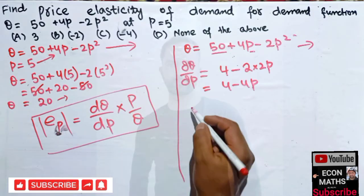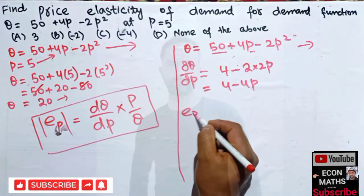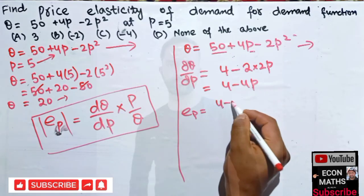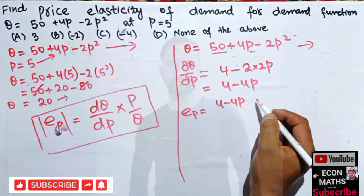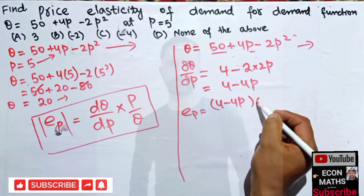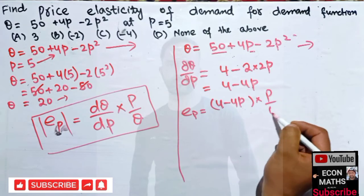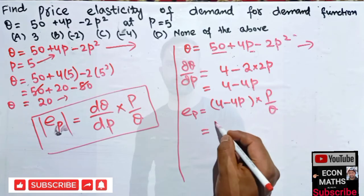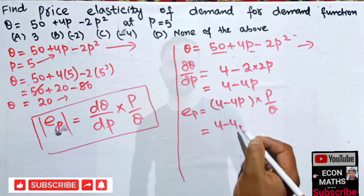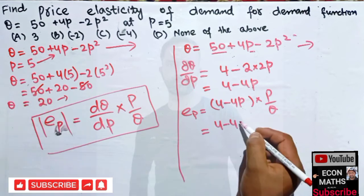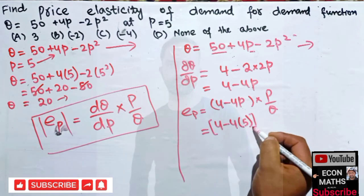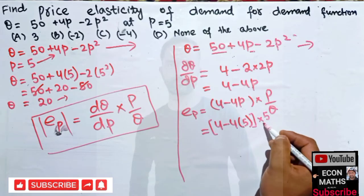Now using this formula, elasticity of demand is given by dq/dp which we got here, 4 - 4p, times p/q. Now we have to insert the value of p and q here, so we have (4 - 4 × 5) times 5 divided by 20.